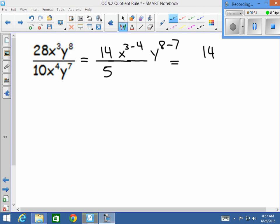So we have 14. 3 minus 4 is negative 1, so we get x to the negative 1st. 8 minus 7 is positive 1, so we get y to the positive 1st all over 5.